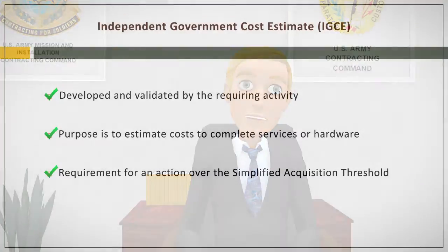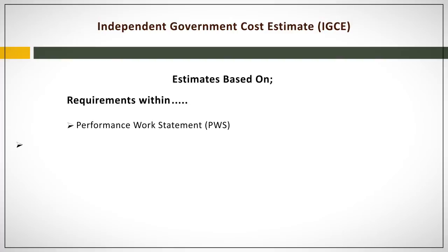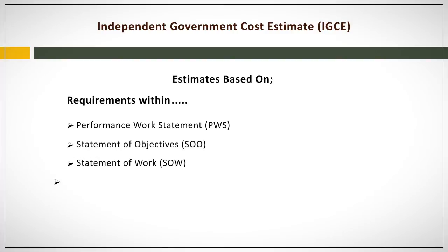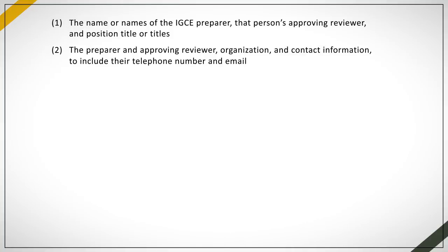Good. So when the requiring activity creates the IGCE, they will base their estimate on the requirements within the performance work statement, statement of objectives, statement of work, or the item description. The extent of IGCE documentation may be different for each procurement, but you will want to immediately look for the name or names of the IGCE preparer, that person's approving reviewer, and position title or titles.